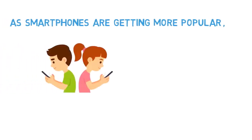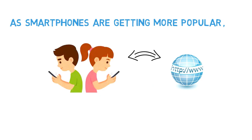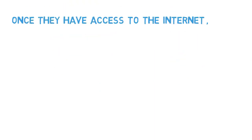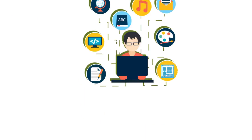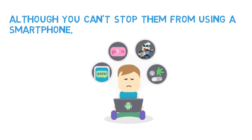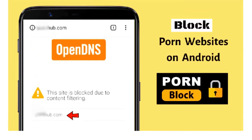As smartphones are getting more popular, teenagers are getting easy access to the internet. And once they have access to the internet, they are open to all sorts of things. Although you cannot stop them from using a smartphone, you can take certain measures to block porn or any kind of adult content on their Android phone. This tutorial will guide you how to block porn websites on Android.